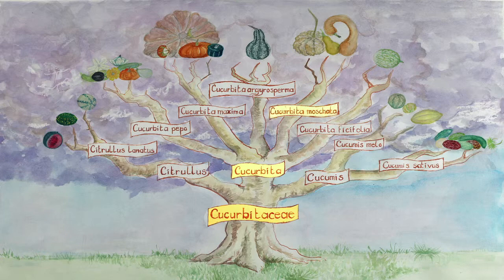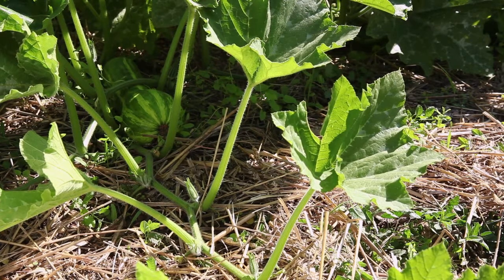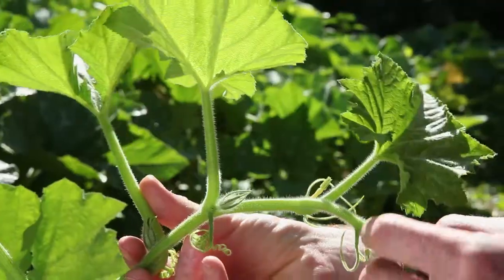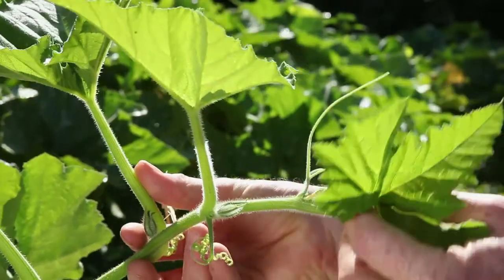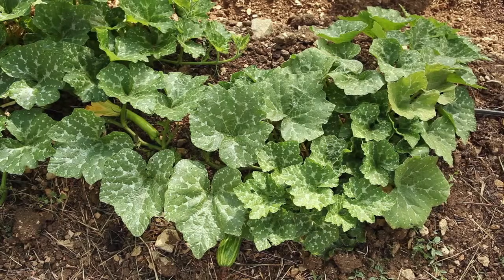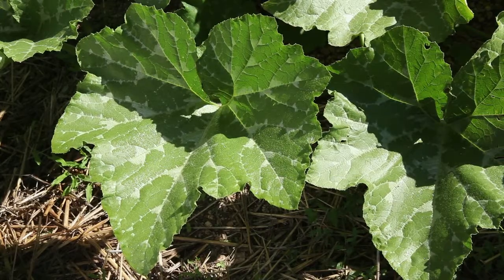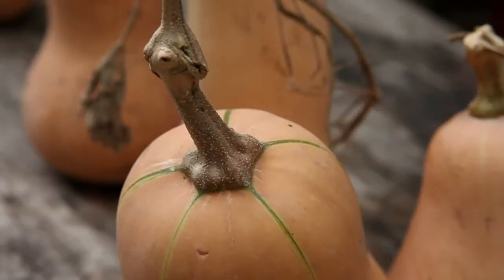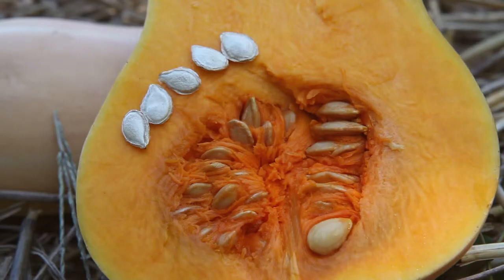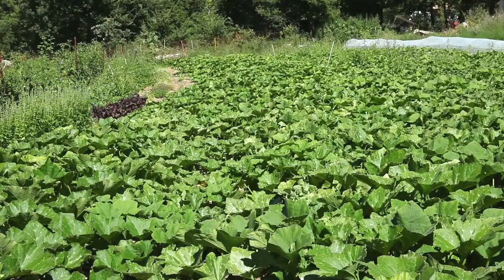Cucurbita moschata is a species in which all plants run along the ground. They have very long and hairy zigzag-shaped vines. Their leaves are often spotted with white, have pointed tips, and slight indentations along the sides. The peduncle is hard, hairy, and slightly angular. The seeds are beige, oblong, and have a dark beige margin. This species needs higher temperatures than other squashes, and the fruit does not always mature in cold climates.